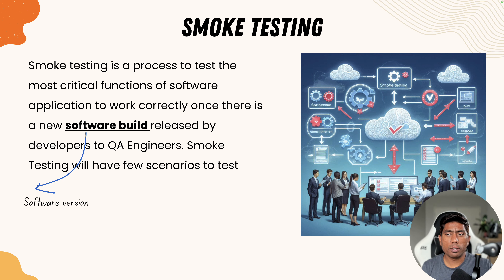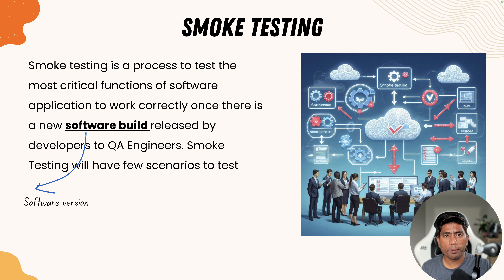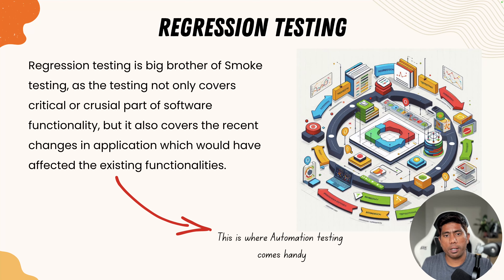In smoke testing, once you receive a software build, you start testing the application to see if basic critical functionality works — for instance, whether the login operation works when the application opens, whether clicking the settings menu brings up the settings window, whether quitting the application closes it or keeps it running in the background, and whether refreshing the page crashes the application. That's what smoke testing is all about.